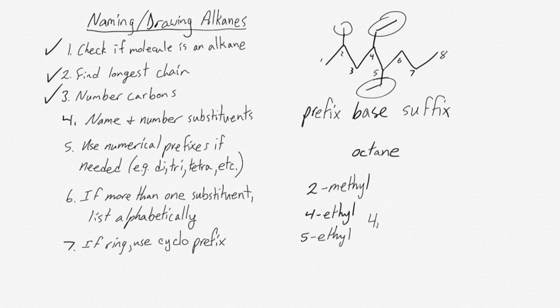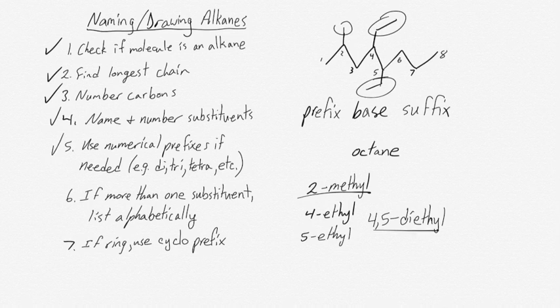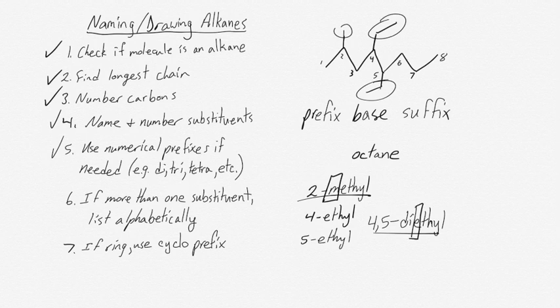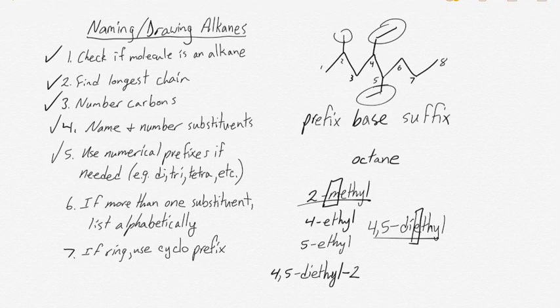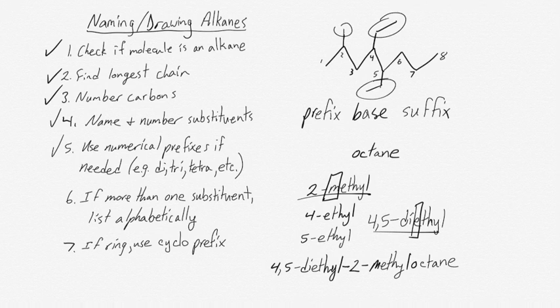We can combine the two ethyl substituents into a single term '4,5-diethyl'. Now we have two different types of prefix — methyl and ethyl — so we have to list them alphabetically. When listing alphabetically, you don't use the numerical prefixes like 'di,' 'tri,' or 'tetra' — you only use the name of the substituent type. So we base alphabetizing on 'E' in ethyl and 'M' in methyl. Listing alphabetically: '4,5-diethyl' comes before '2-methyl'. Our base and suffix are 'oct' and 'ane,' so the overall name is 4,5-diethyl-2-methyloctane.